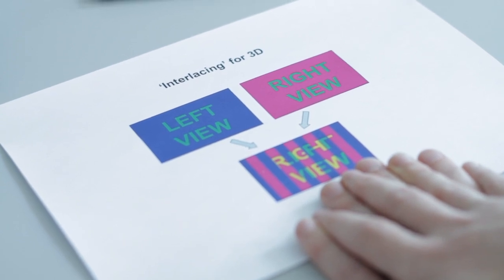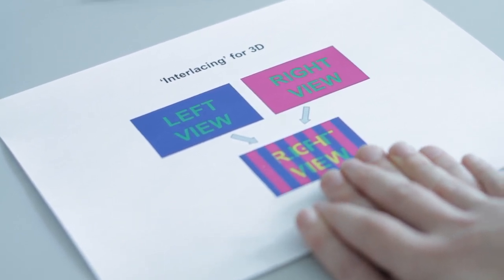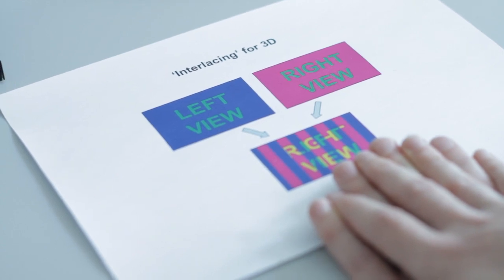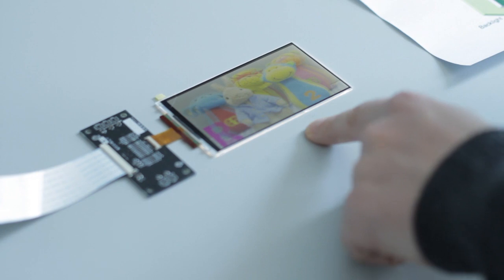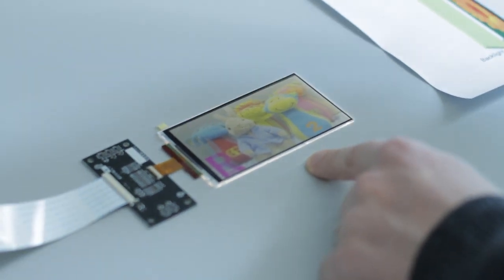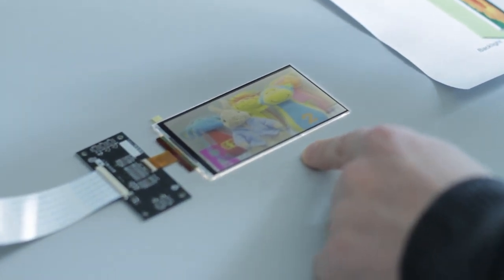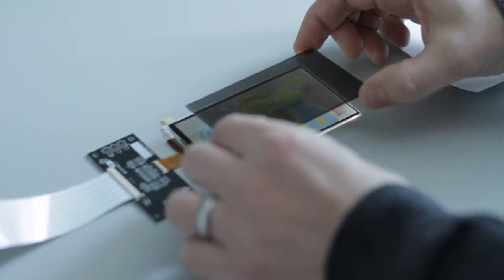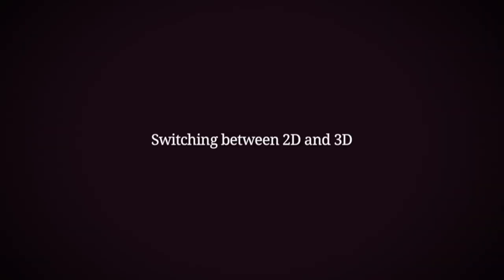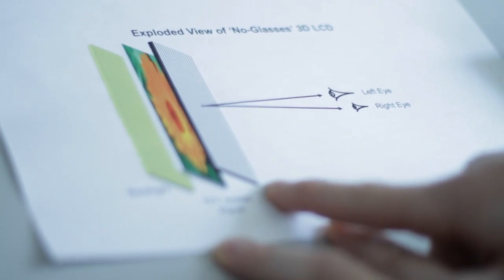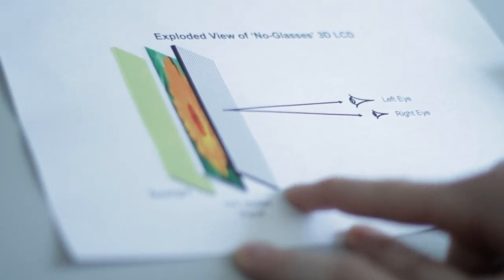That will then project the left view into your left eye and the right view into your right eye, giving you a 3D effect. This is a prototype mobile phone screen and it's showing an interlaced image, and if I put this parallax barrier on top it will give the 3D effect. We realized that you need to be able to switch that into a 2D mode, so we set ourselves the challenge of making the display 2D/3D switchable.